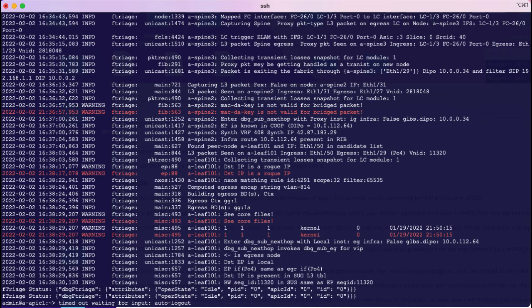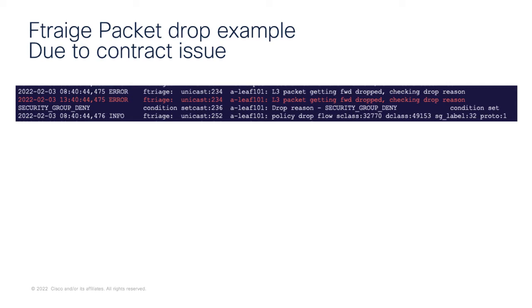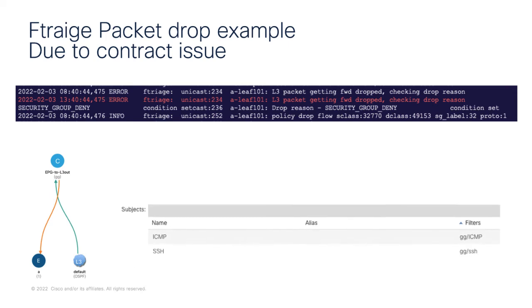If the packet is being dropped by one of the leafs or the spines in the fabric, the trace will indicate that information as well. Here is an example: on the pod1 leaf, where the destination endpoint is connected, the packet is being dropped because of the reason 'security-group-denied', which is nothing but a missing contract to allow ICMP traffic between source and destination. This is a pretty simple issue to fix — go to the contract between the L3out and the EPG and add the subject filter that allows ICMP traffic.